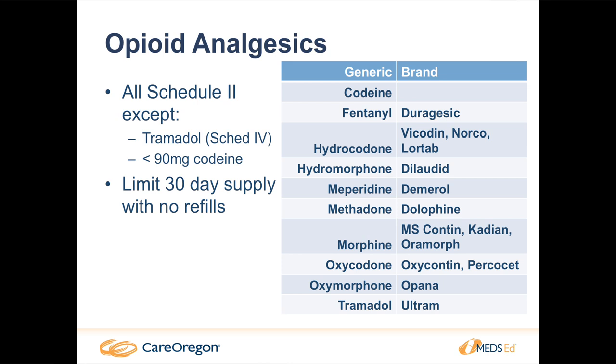For completeness, here's a list of our different opioids. They come in long-acting and short-acting products, as well as combination products with Tylenol. All are DEA Schedule 2 with the exception of tramadol, which is Schedule 4, and some doses of codeine are Schedule 3, with above 90 milligrams being Schedule 2. When a drug is Schedule 2, a patient needs a new prescription every month — there are no refills. Last year when Vicodin or hydrocodone was switched from Schedule 3 to Schedule 2, that caused a big change in workflow and practice.